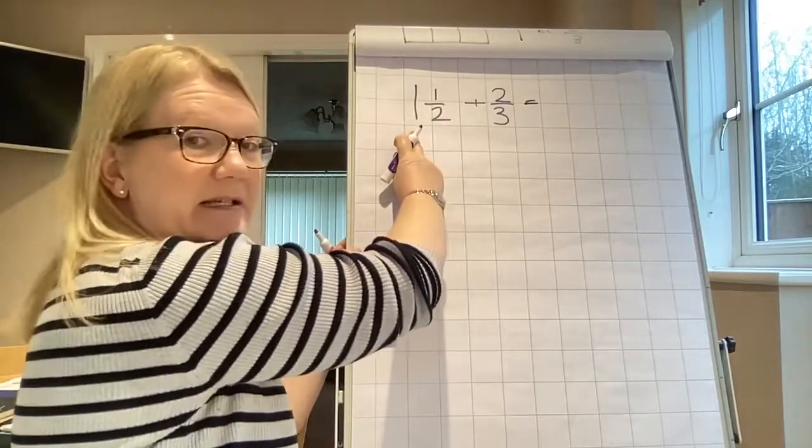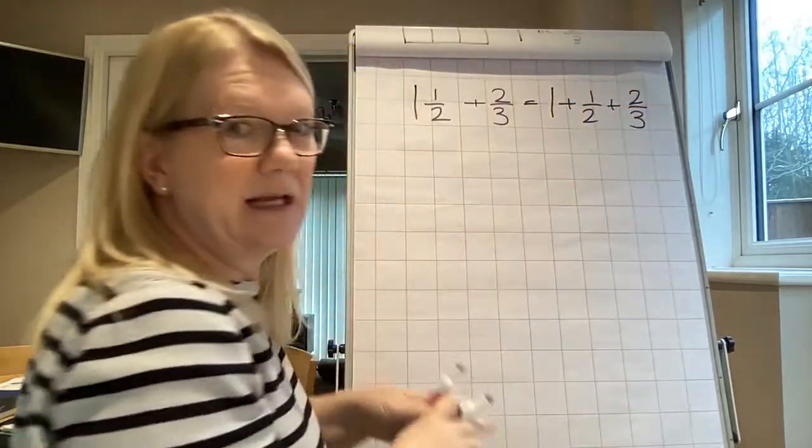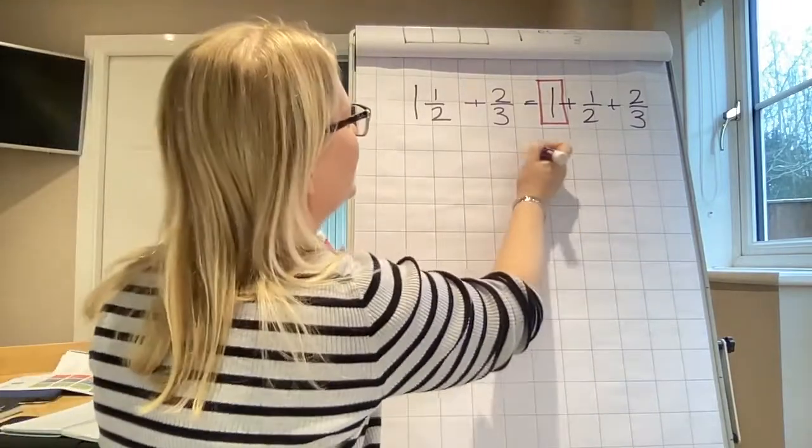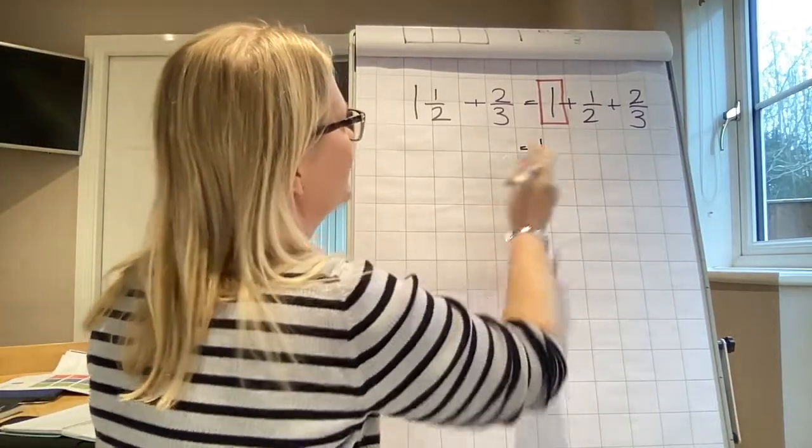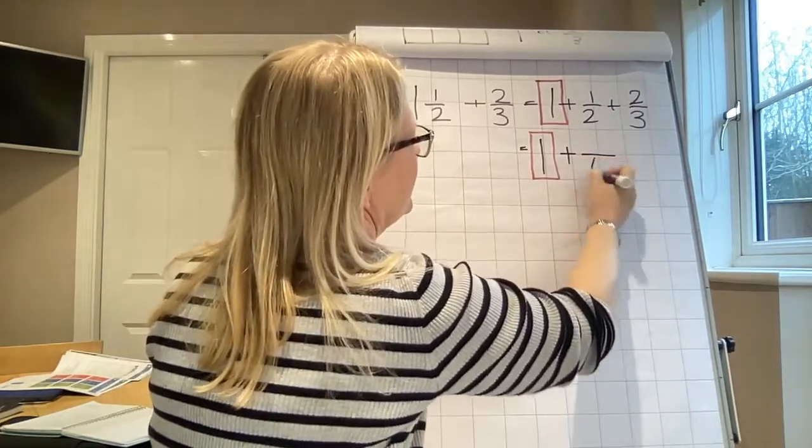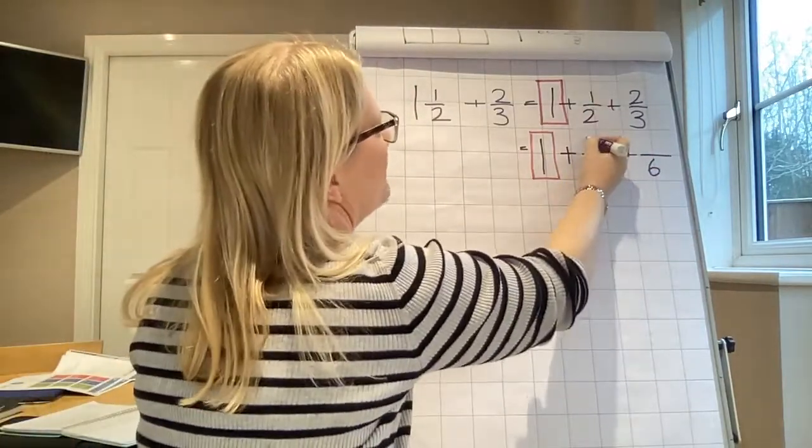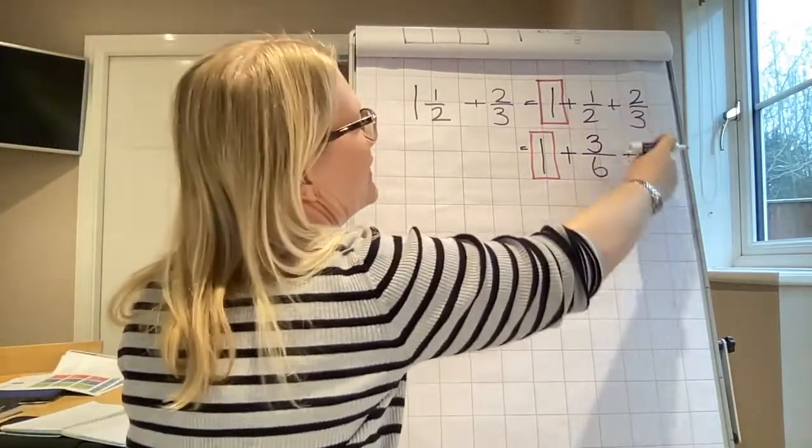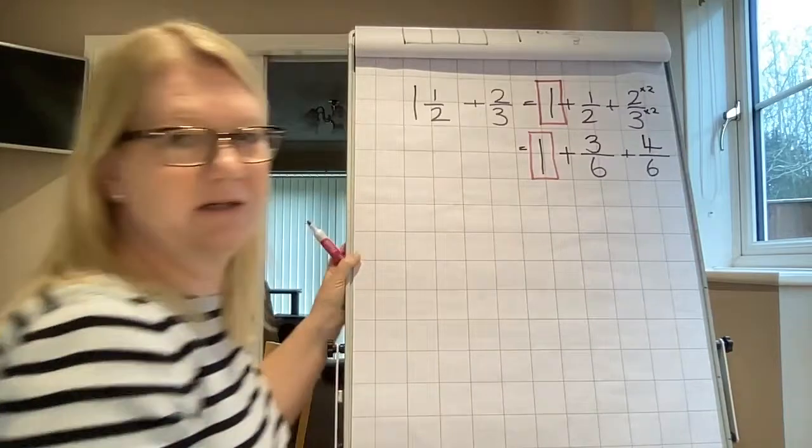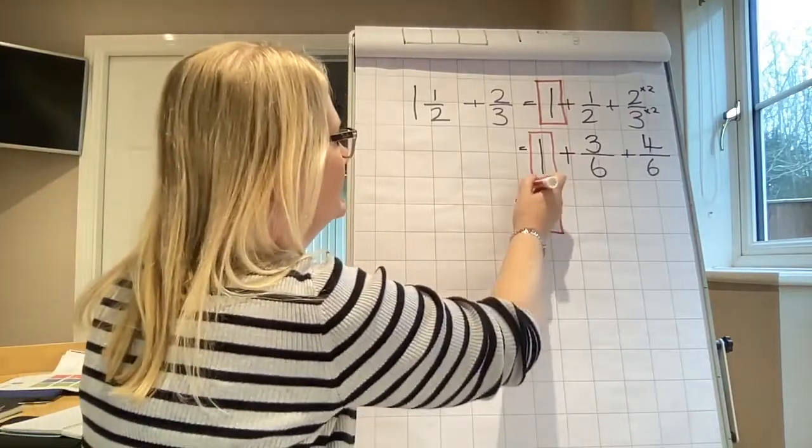Okay. So first thing I'm going to do is I am going to partition this number. I'm going to separate the proper fraction from the integer or the whole number. So I'm going to say one plus one half plus two thirds. And I'm going to put that square around my one again. So I don't forget it.